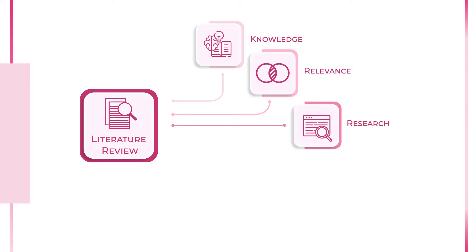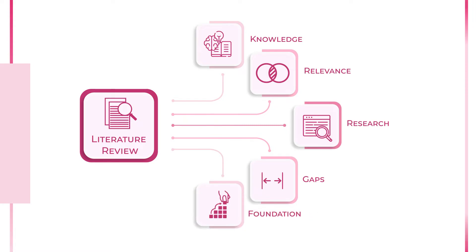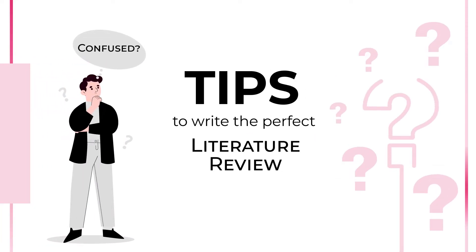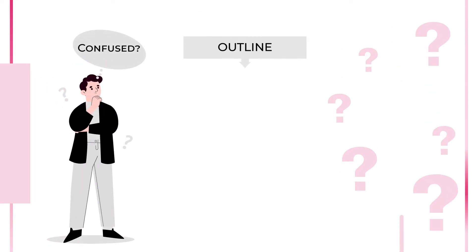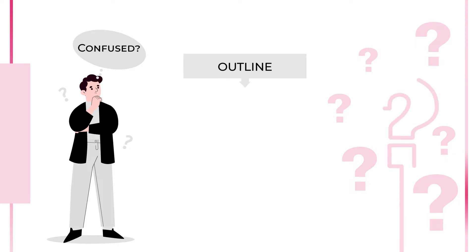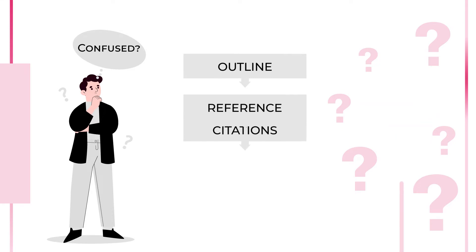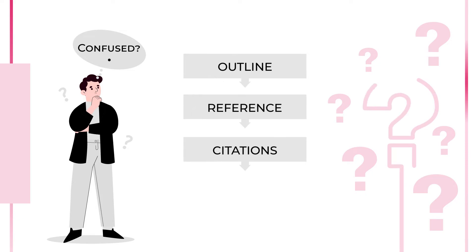The chapter should demonstrate your knowledge on the topic, the relevance of the research to your chosen topic, and a foundation on which you build your thesis. Just like any other piece of writing, you need to first draft a rough outline of what you want your literature review to say. Check other already existing literature reviews to get an idea about the writing technique. Keep adding citations as you go — do not wait for the entire write-up to be over.